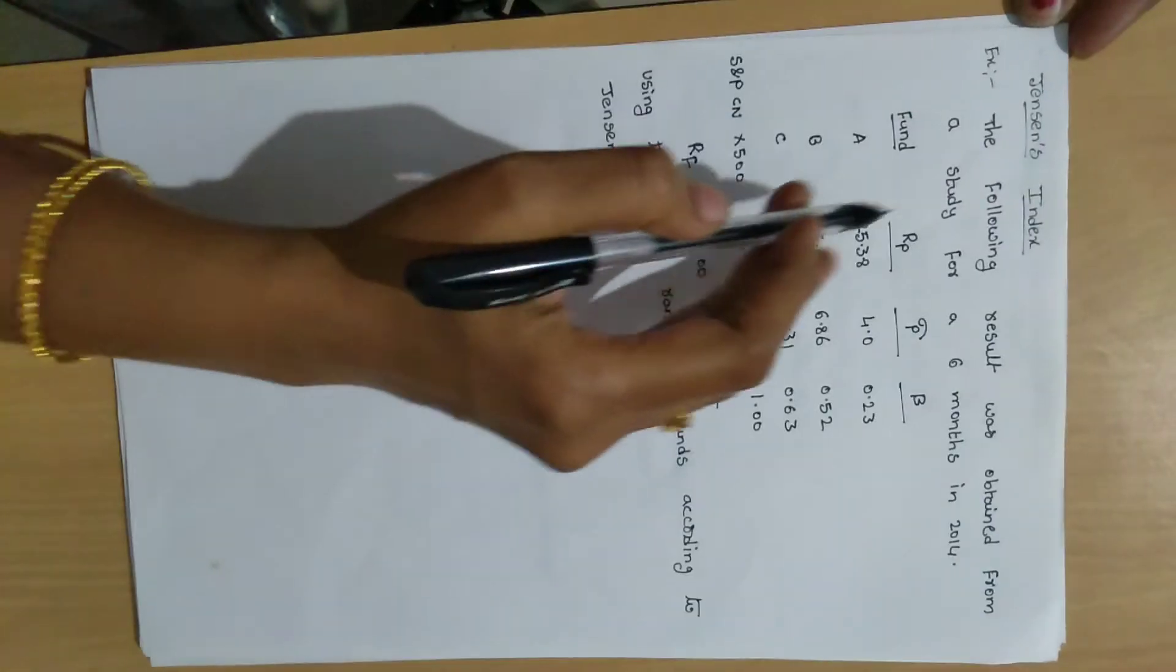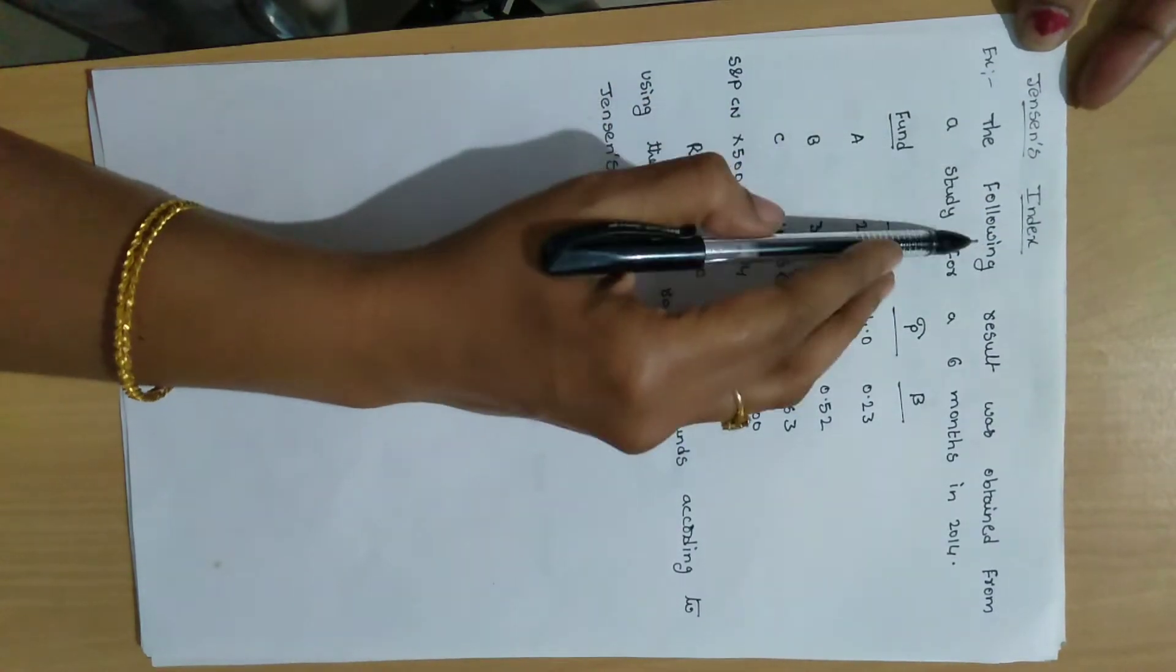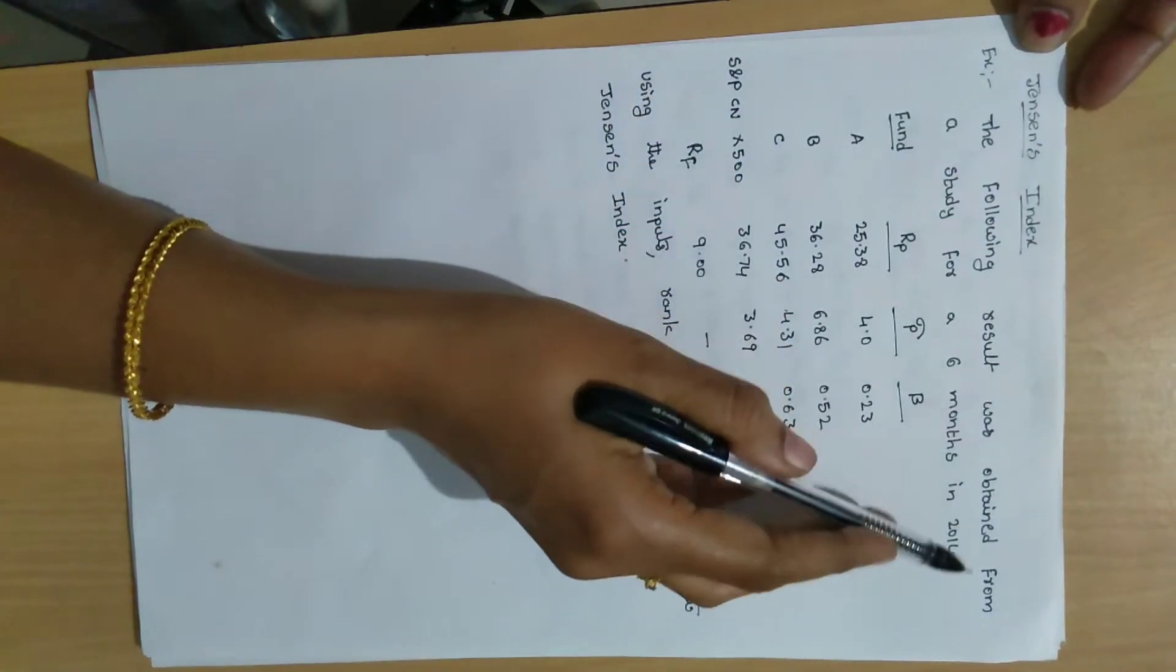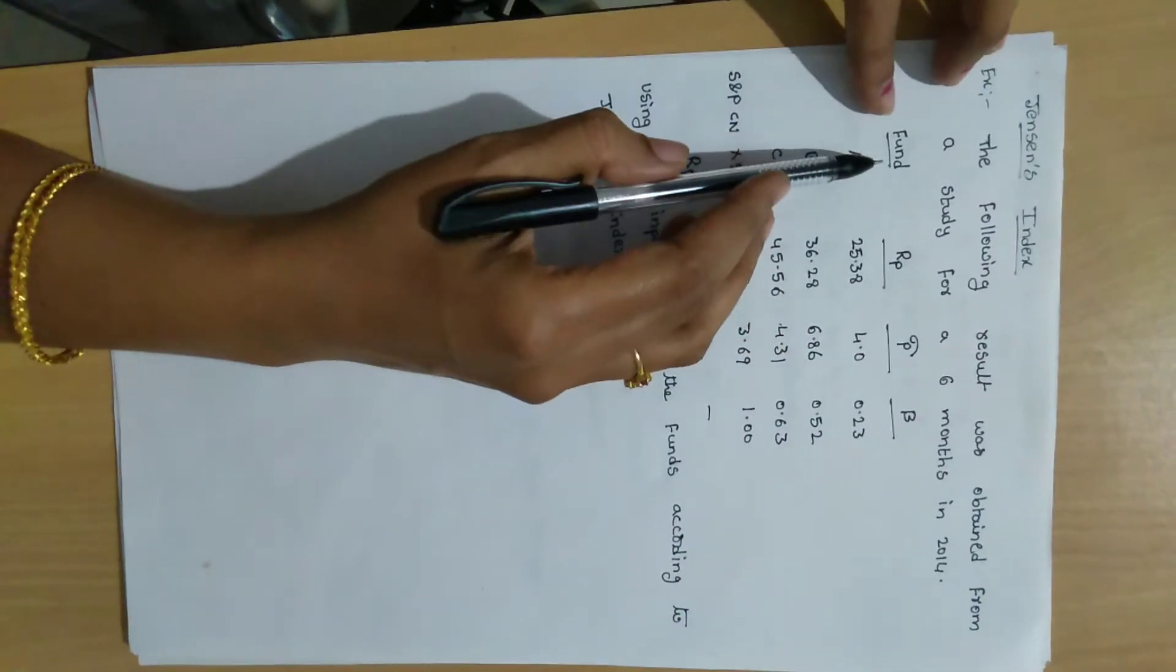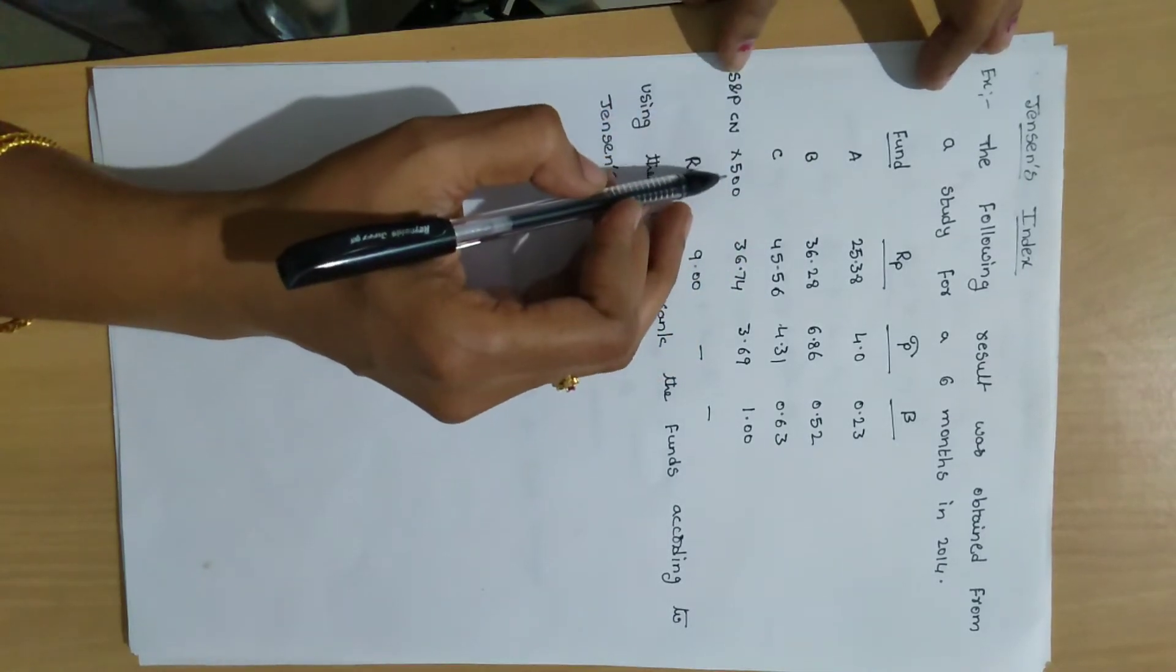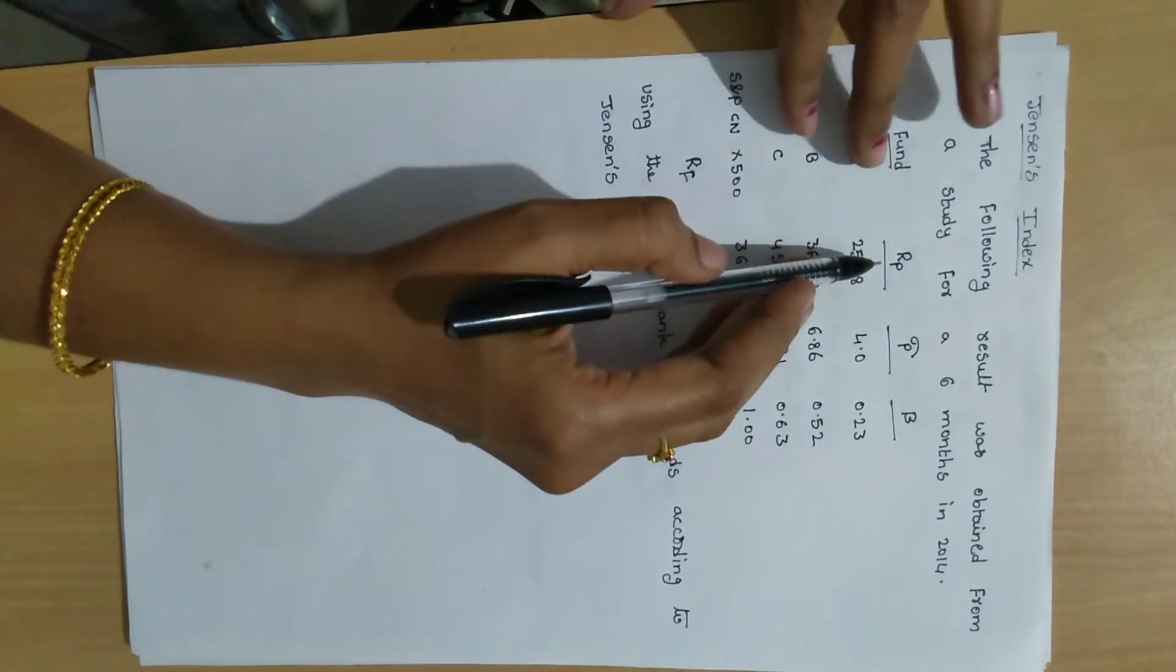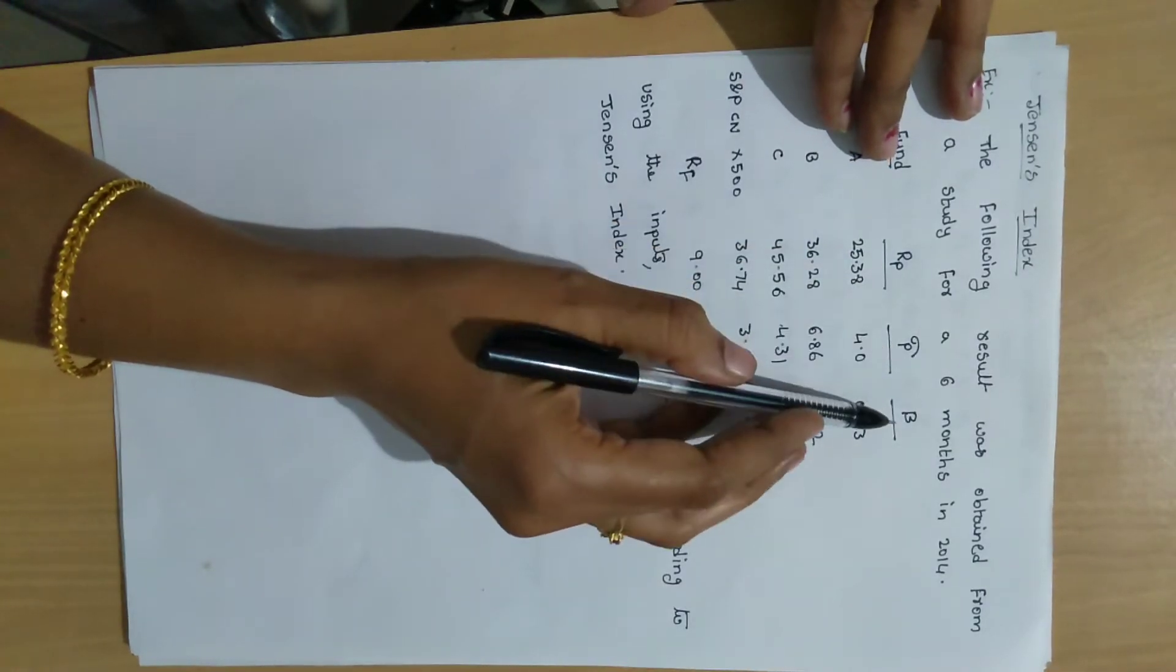Example problem on Jensen's index. The following result was obtained from a study for six months in 2014. Here fund A, B, C and S&P CNX 500. And RP values, sigma P, standard deviation P and beta coefficients.